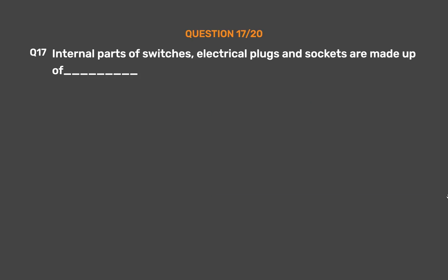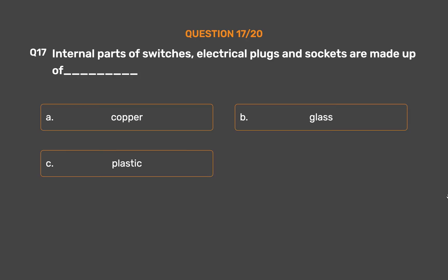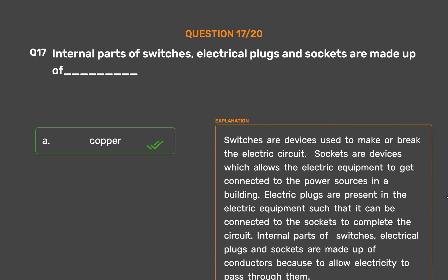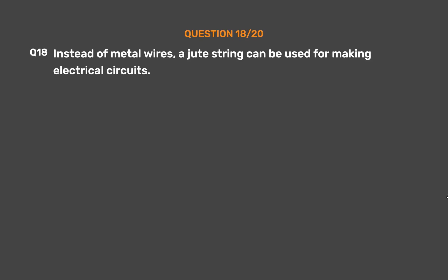Question number 17. Internal parts of switches, electrical plugs, and sockets are made up of blank. Option A: Copper. Option B: Glass. Option C: Plastic. Option D: Rubber. The correct answer is Option A, Copper. Switches are devices used to make or break the electric circuit. Sockets allow electric equipment to connect to power sources. Electric plugs connect to sockets to complete the circuit. Internal parts of switches, electrical plugs, and sockets are made up of conductors to allow electricity to pass through them.